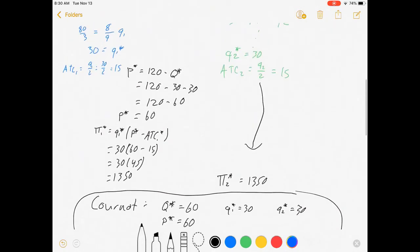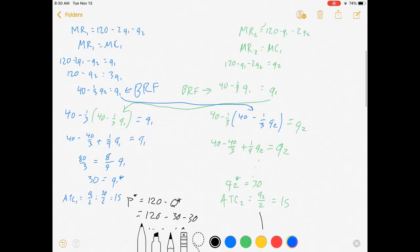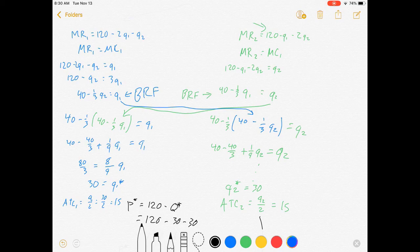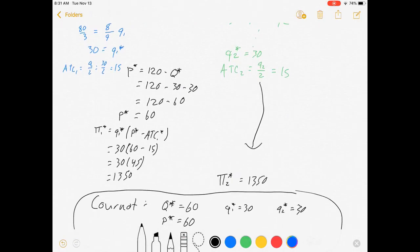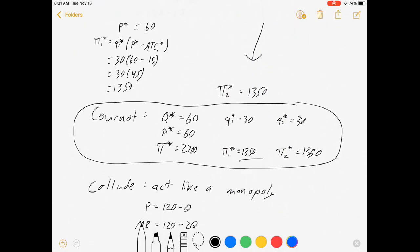To review the Cournot stuff, the main trick was first setting up the marginal revenue function where we doubled the slope based on the variable we're choosing, but we did not double the slope based on the variable someone else is choosing. That's just a shifter. And then the next trick is here in this substitution, where you substitute the best response functions for the two firms into each other. Other than that, we're pretty much just doing all the same stuff we've been doing for a few weeks.